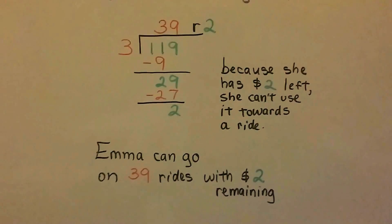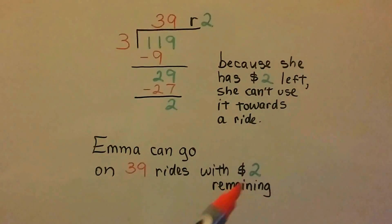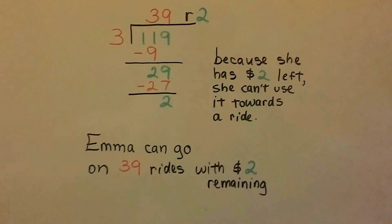So if it asks you how many rides she can go on, well, the answer is 39. She's got money left over that she can't do anything with. Maybe she can buy a hot dog.